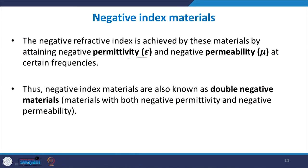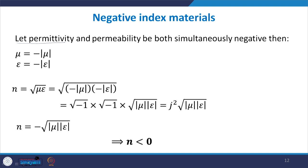To obtain a negative index material, the way to achieve this is to make ε and μ simultaneously negative. Such materials are also called double negative materials because both μ and ε are made negative at the same time. If at certain frequencies both permittivity and permeability become simultaneously negative, then μ can be written as minus its positive absolute value, and ε similarly as minus its absolute value, so n = √(με) becomes √((−|μ|)(−|ε|)).